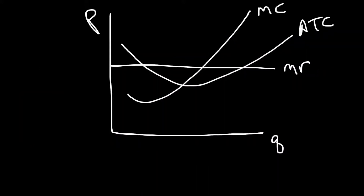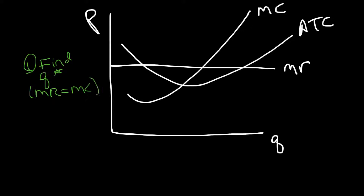Here's a quick summary of how to show profit or loss on a graph, broken into steps. Step one: find Q*, which is where MR equals MC. That's the magical point — the quantity that is profit maximizing or loss minimizing, because that's where marginal revenue and marginal cost are equal.